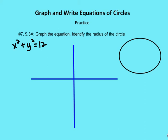In this video, we're going to cover some of the problems from our homework that are involved in graphing and writing equations of circles. The first problem from chapter 9.3 asks us to graph the equation of the circle identified below. We recall that the formula for a circle is x-squared plus y-squared is equal to r-squared, with r being the radius.